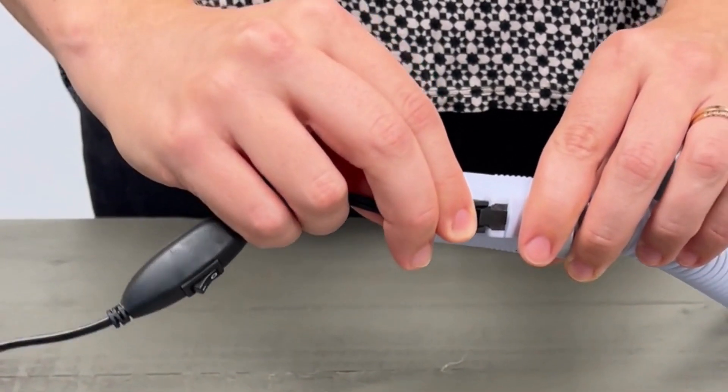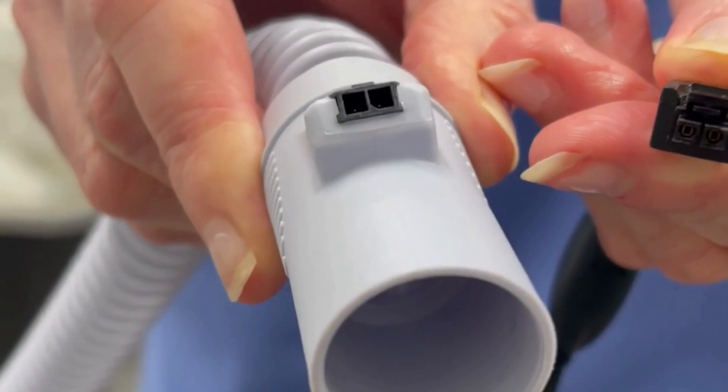The copper wires are embedded in the walls of the tubing so it is safe to wash in soap and water for regular cleaning.